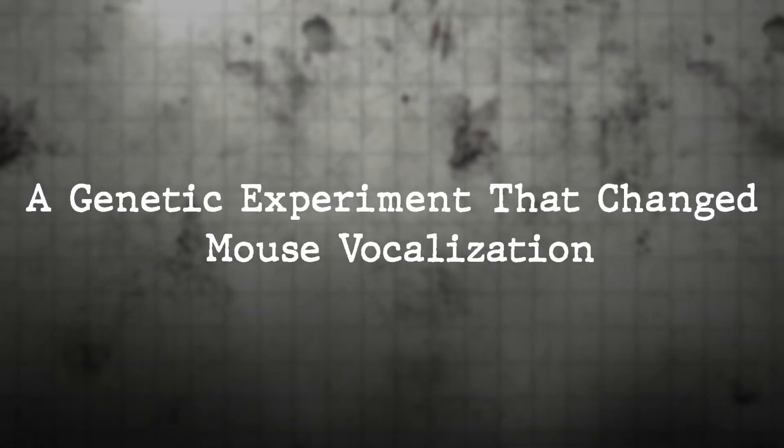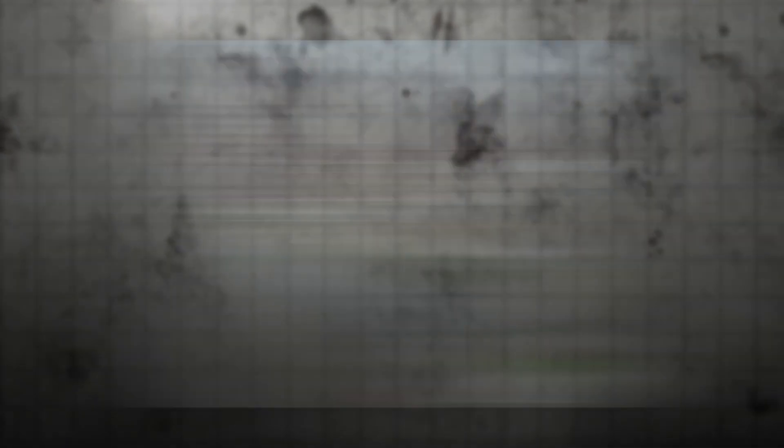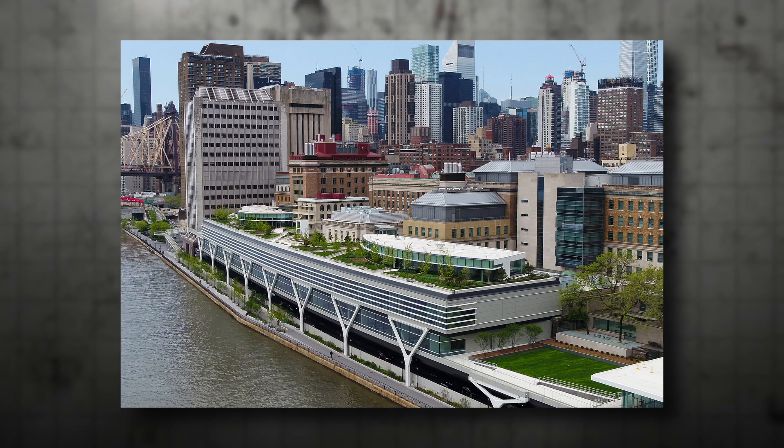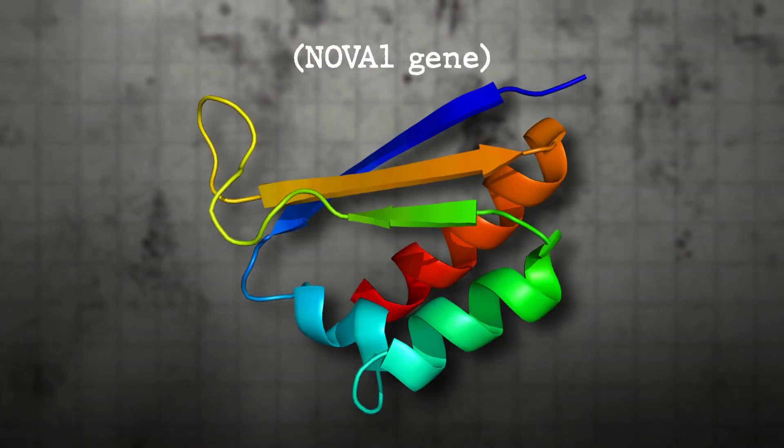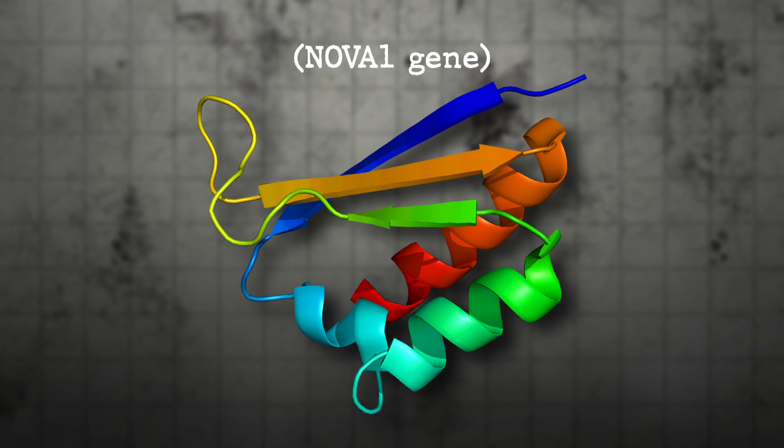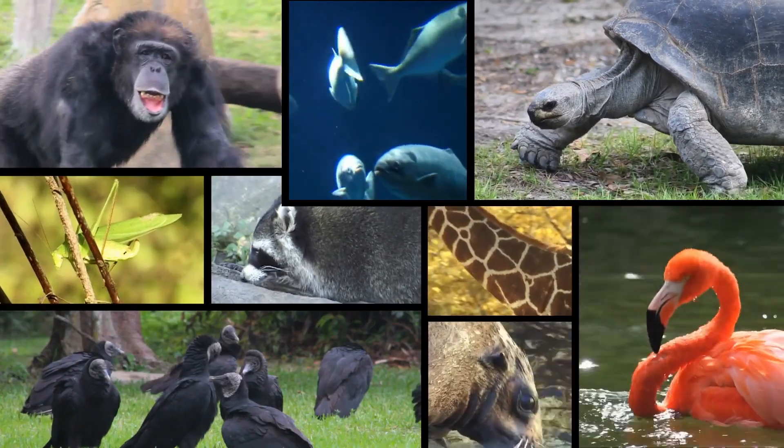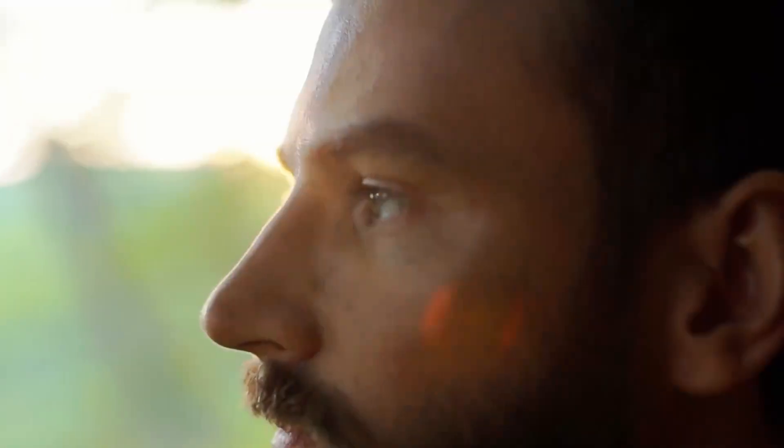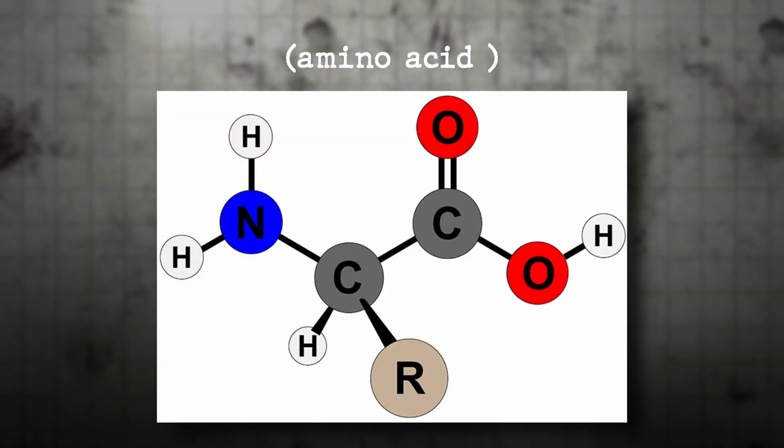Scientists at Rockefeller University sought to investigate how the NOVA1 gene, which plays a role in brain function, affects vocal communication. This gene exists across many species, but in humans it contains a single amino acid difference - a tiny mutation that might have had profound evolutionary consequences.